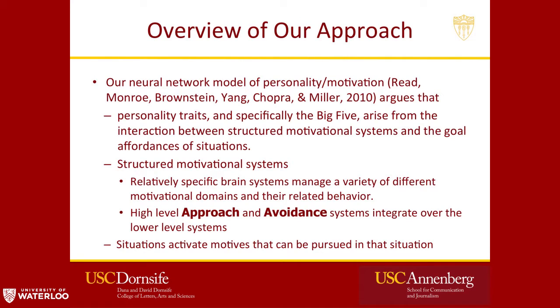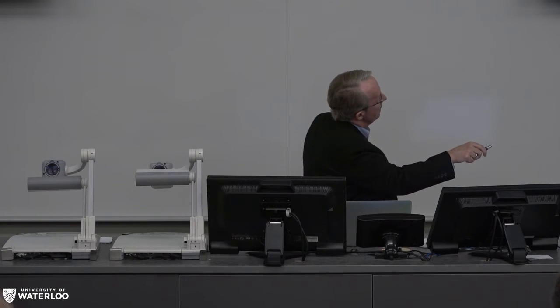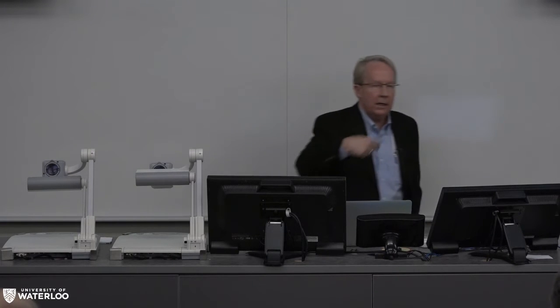We've been working on this neural network model of personality and argue that you can understand personality as arising from the interaction between structured motivational systems and the nature of the situations people are in. There are specific brain systems that manage different motivational domains like mating, parenting, and friendship formation. There are also high-level approach and avoidance systems dealing with reward and punishment that integrate over these lower-level systems. Situations activate motives that can be achieved in that situation.